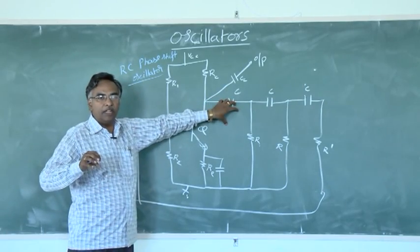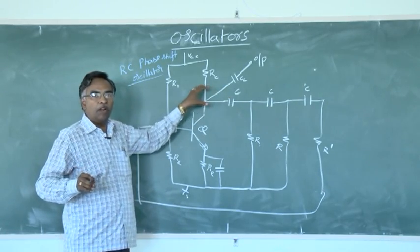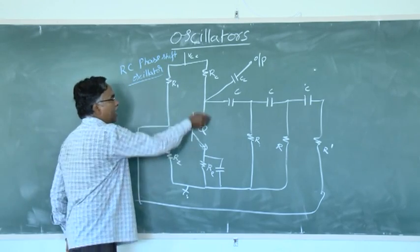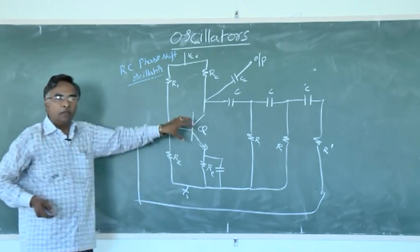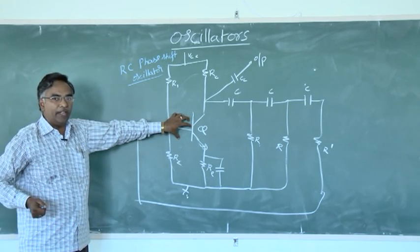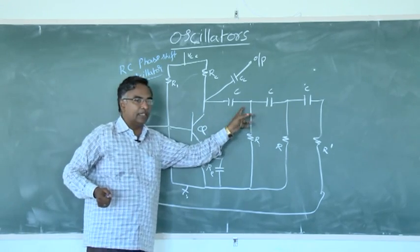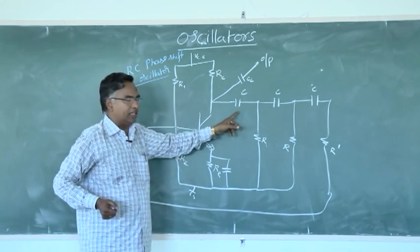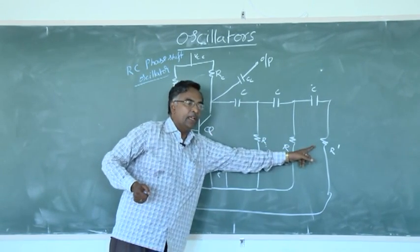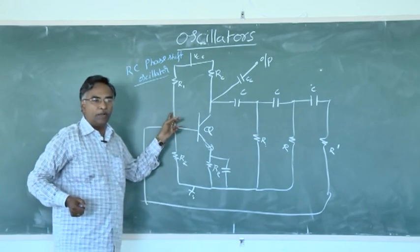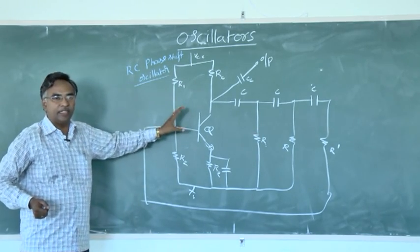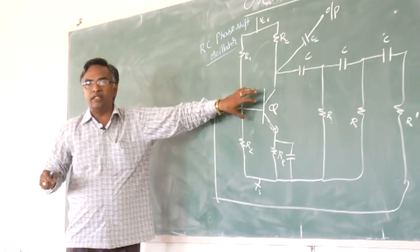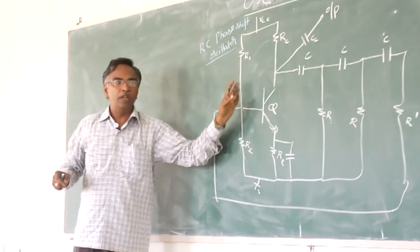For producing oscillations, the overall phase shift must be equal to 0 degrees or 360 degrees. The CE amplifier produces 180 degrees, and one more 180 degrees is produced by the three RC sections. Each RC section produces a maximum phase shift of 60 degrees — 60 plus 60 plus 60 equals 180 degrees — giving a total of 360 degrees, which satisfies the requirement for producing oscillations.